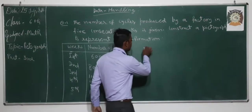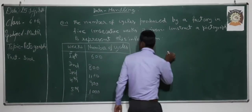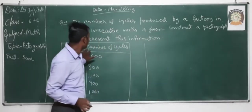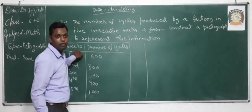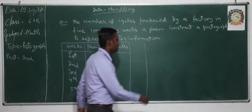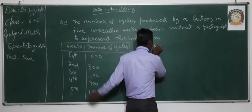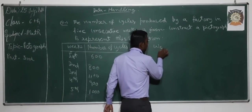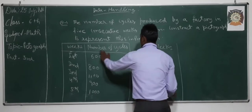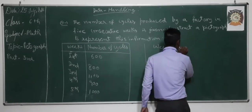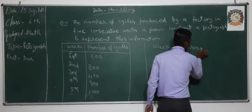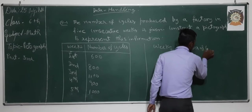Let us start. First, we have to make two columns — one for the week and second for the number of cycles. We write the weeks: first, second, third, fourth, and fifth in the first column, and use a cycle symbol for the number of cycles in the second column.